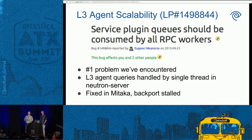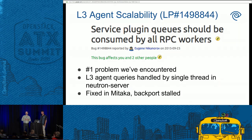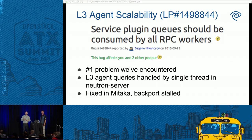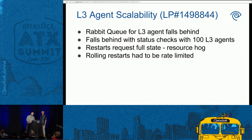The biggest problem we've run into is Launchpad bug 1498844. The issue is that the L3 agent talks to Neutron Server to provision routers, and all of those queries are handled in a single thread in Neutron Server. This is fixed in Mitaka — the backport merged last week. The fix allows Neutron Server to handle queries from L3 agents in all of the threads it's running, going from a single thread to tens of threads depending on configuration. Importantly, this bug was originally reported with DVR — it's really a generic 'running lots of L3 agents' problem, so we would have run into the same issue had we pursued DVR.